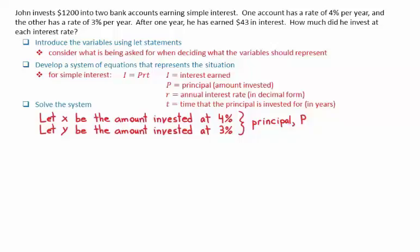We then have to come up with equations corresponding to the situation. The first equation can correspond to the total amounts invested. These must add up to 1,200, which is the total amount placed in the bank accounts.